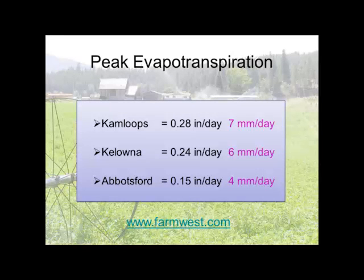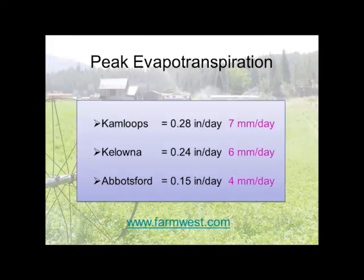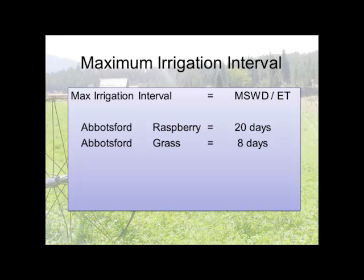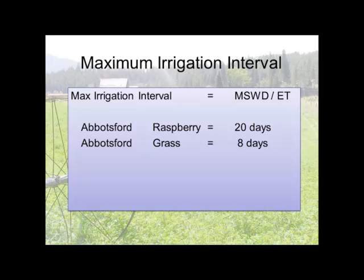Keep peak evapotranspiration in mind. If we look at the maximum irrigation interval — how long before we have to come back — that depends on how much water we put on. If we irrigate to the total maximum soil water deficit and look at the evapotranspiration rate, dividing gives us how many days before we have to come back. In Abbotsford, for raspberries we can go about 20 days between irrigations. For grass we have to be back in eight days. For high-value crops like raspberries, blueberries, or potatoes, it's important to come back on schedule to avoid crop quality or production loss.